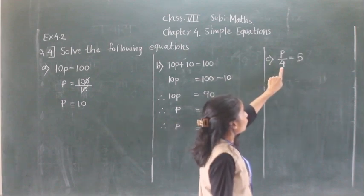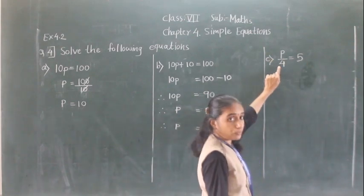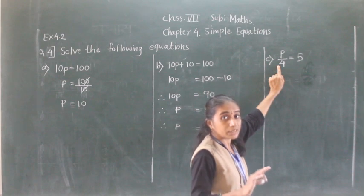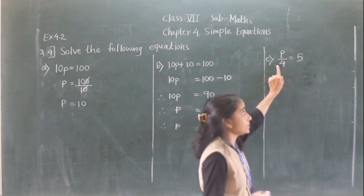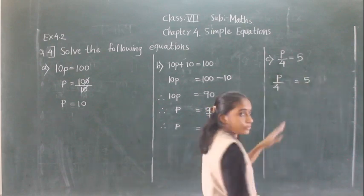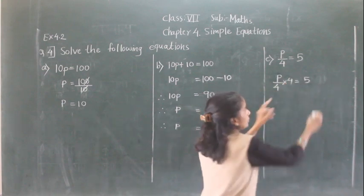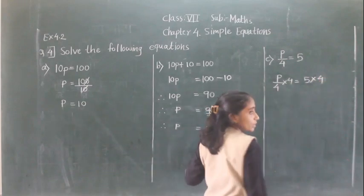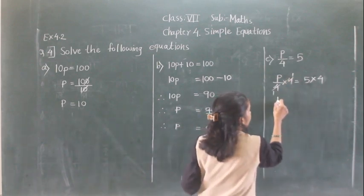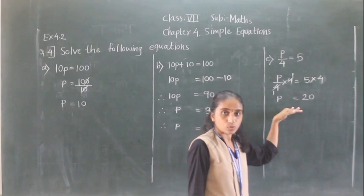Next question: p divided by 4 is equal to 5. Using the balancing method — p divided by 4, the opposite of division is multiplication. So we multiply both sides by 4. The 4 in the denominator and the 4 we multiplied cancel each other. On the right side, 5 times 4 = 20. So p is equal to 20.